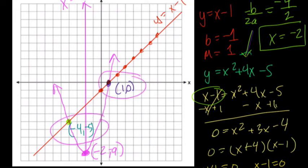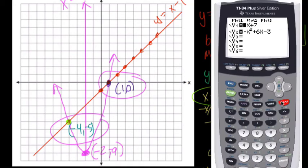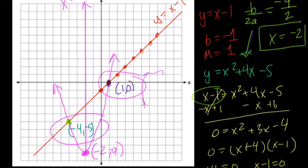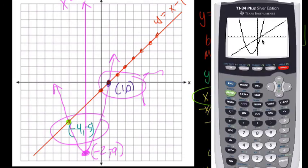On a calculator, you could just go to y equals and enter this in really quickly. And that's maybe how you do it. x minus 1, enter. And then the other one's x squared, add the exponent there. And then plus 4x, and then minus 5. I should have cleared it off first. Do it again, x squared, plus 4x and then minus 5. Enter.